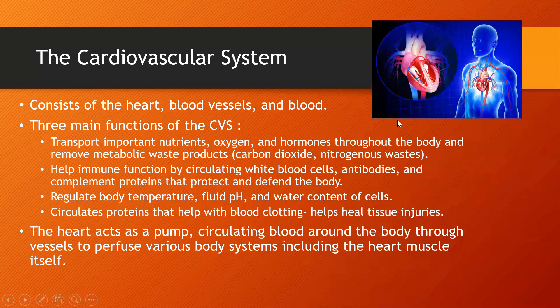Let's start by revising some of the anatomy of the cardiovascular system. It consists of the heart, which is the pump — it's got two atria, two ventricles — as well as the blood vessels, including arteries and veins, and then the actual blood that is being circulated. These are the components of the cardiovascular system, and we can also talk about the main functions brought about by the system.